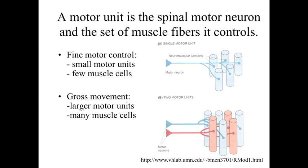Thinking about what we discussed in the nervous system lecture, the axon goes out and branches, making contact with a number of different targets. One motor neuron branches and makes synaptic connections with a number of different targets. This allows us to have a motor unit — a single spinal cord neuron and all of the muscle fibers that it controls. So you can have one motor neuron making connections with many different muscle cells, forming a large motor unit.